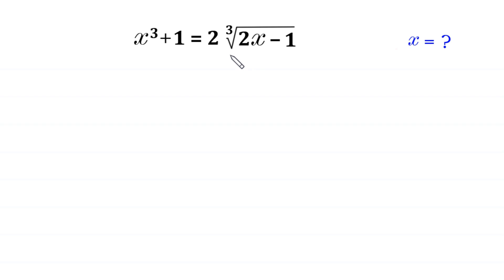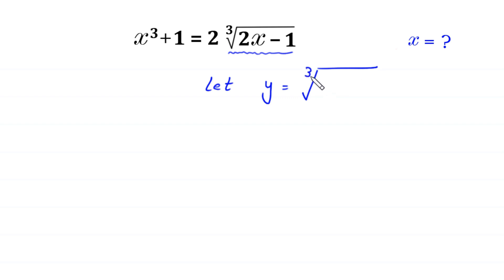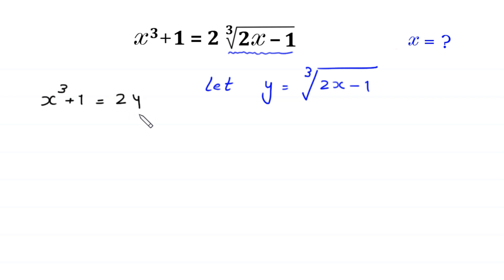First of all, we suppose that the expression cube root of 2x minus 1 is equal to y. Let y equal the cube root of 2 times x minus 1, and we substitute y in place of the cube root of 2x minus 1. Then this equation becomes x cubed plus 1 is equal to 2 times y. Moving plus 1 to the right side gives x cubed is equal to 2y minus 1. We name this equation 1.